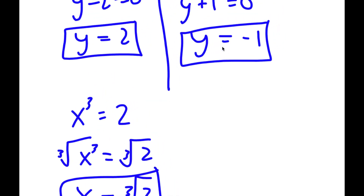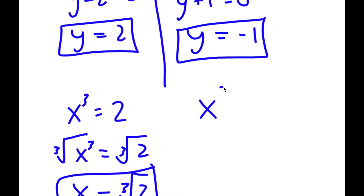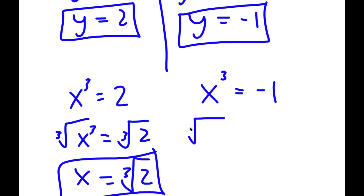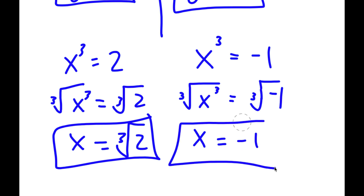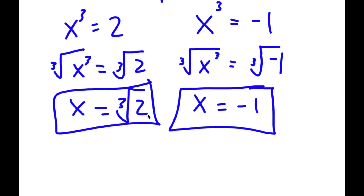Now for negative 1, I have x to the power of 3 is equal to negative 1. I'm going to take the cube root on both sides. Cube root of x to the power of 3 is again x, and the cube root of negative 1 is negative 1. So my two solutions for this are the cube root of 2 and negative 1.